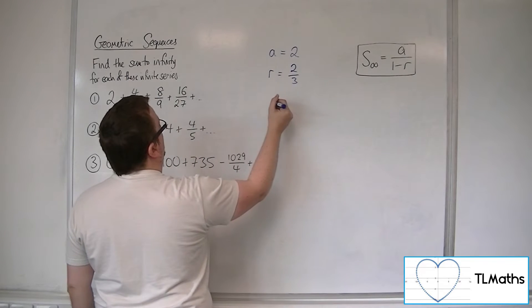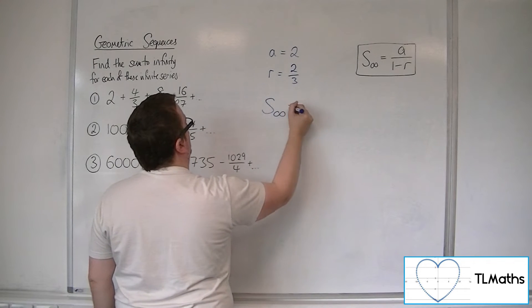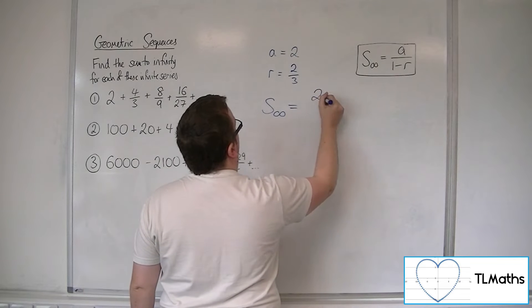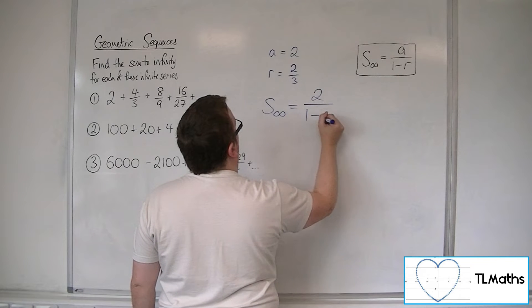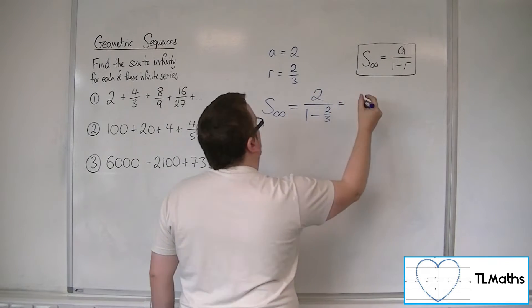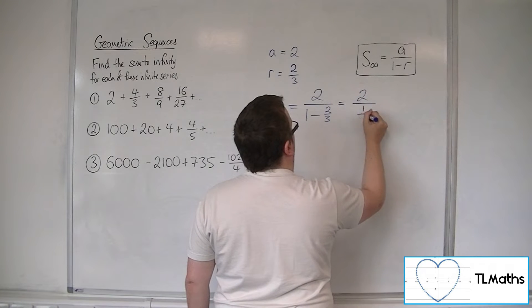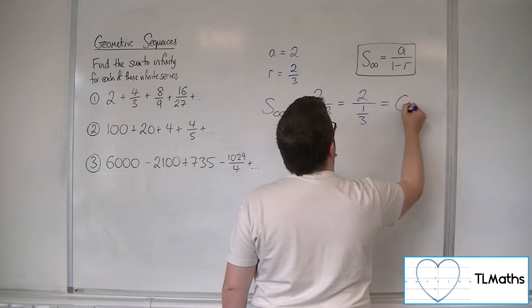So the sum to infinity is equal to the first term 2 divided by 1 minus the common ratio 2 thirds. So that's 2 over 1 third, which is equal to 6.